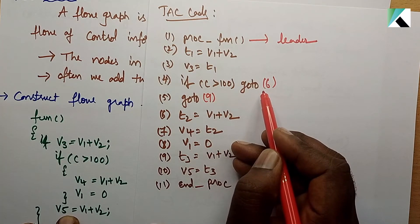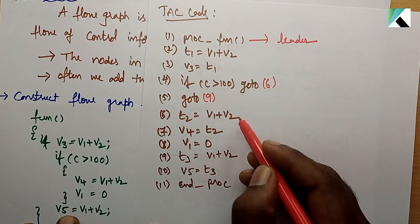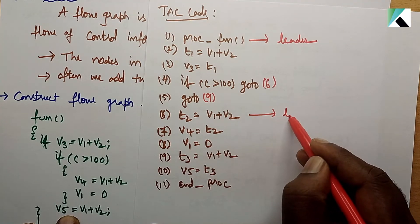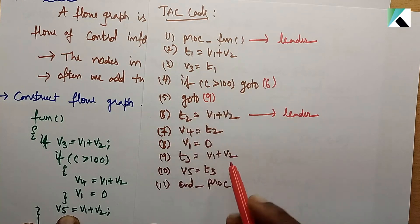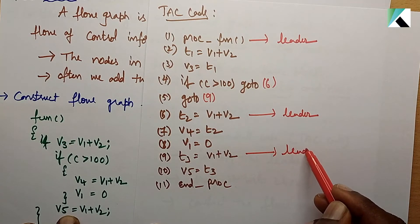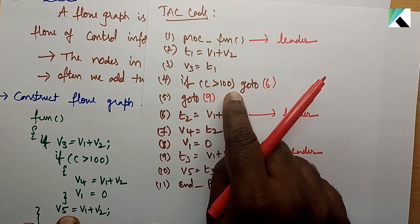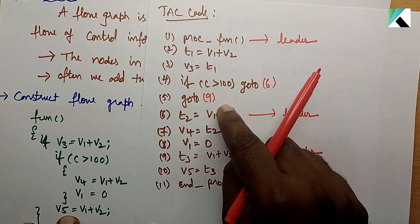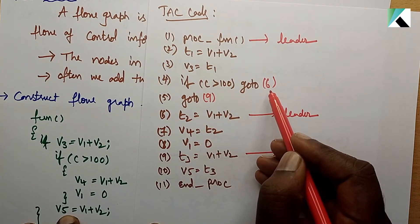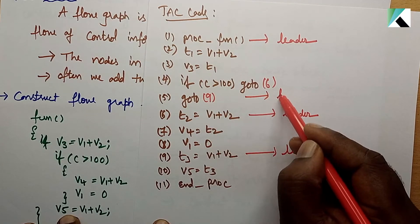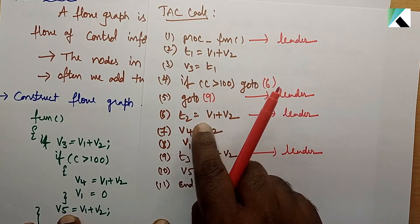A conditional jump target is a leader. The next statement after a conditional or unconditional jump is also a leader. Here, the go-to statement makes the next statement a leader according to the third rule. This unconditional jump means its next statement is a leader. So we have four leaders identified.